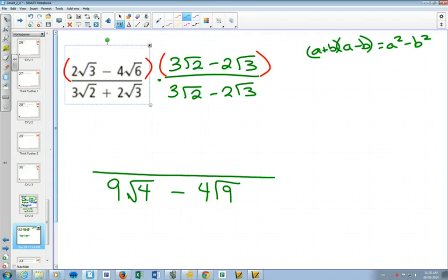2 times 3 will be 6 root 6. Do the outside ones. Minus 4 root 9. Inside ones, minus 12 root 12. And finally, the last ones, negative 4 times a negative 2 will be positive 8. Root 6 times root 3 will be root 18.